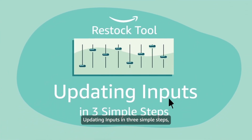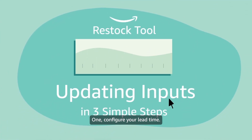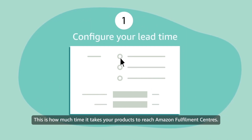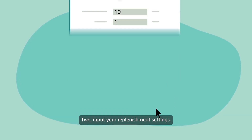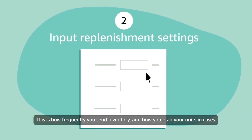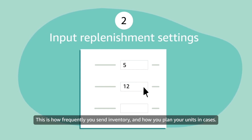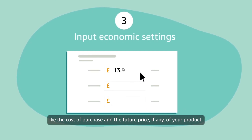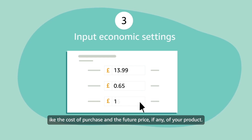Updating inputs in three simple steps. First, configure your lead time — this is how much time it takes your products to reach Amazon Fulfillment Centers. Second, input your replenishment settings — this is how frequently you send inventory and how you plan your units in cases. Third, input your economic settings, like the cost of purchase and the future price, if any, of your product.